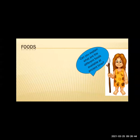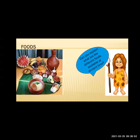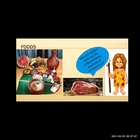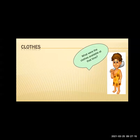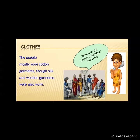Looking at the food in ancient India, one thing you can observe from the picture is that earthen pots were used for eating. The foods mostly included fruits, and beef was also used for eating at that time. As for clothing, people mostly wore cotton garments, though silk and woolen garments were also worn.